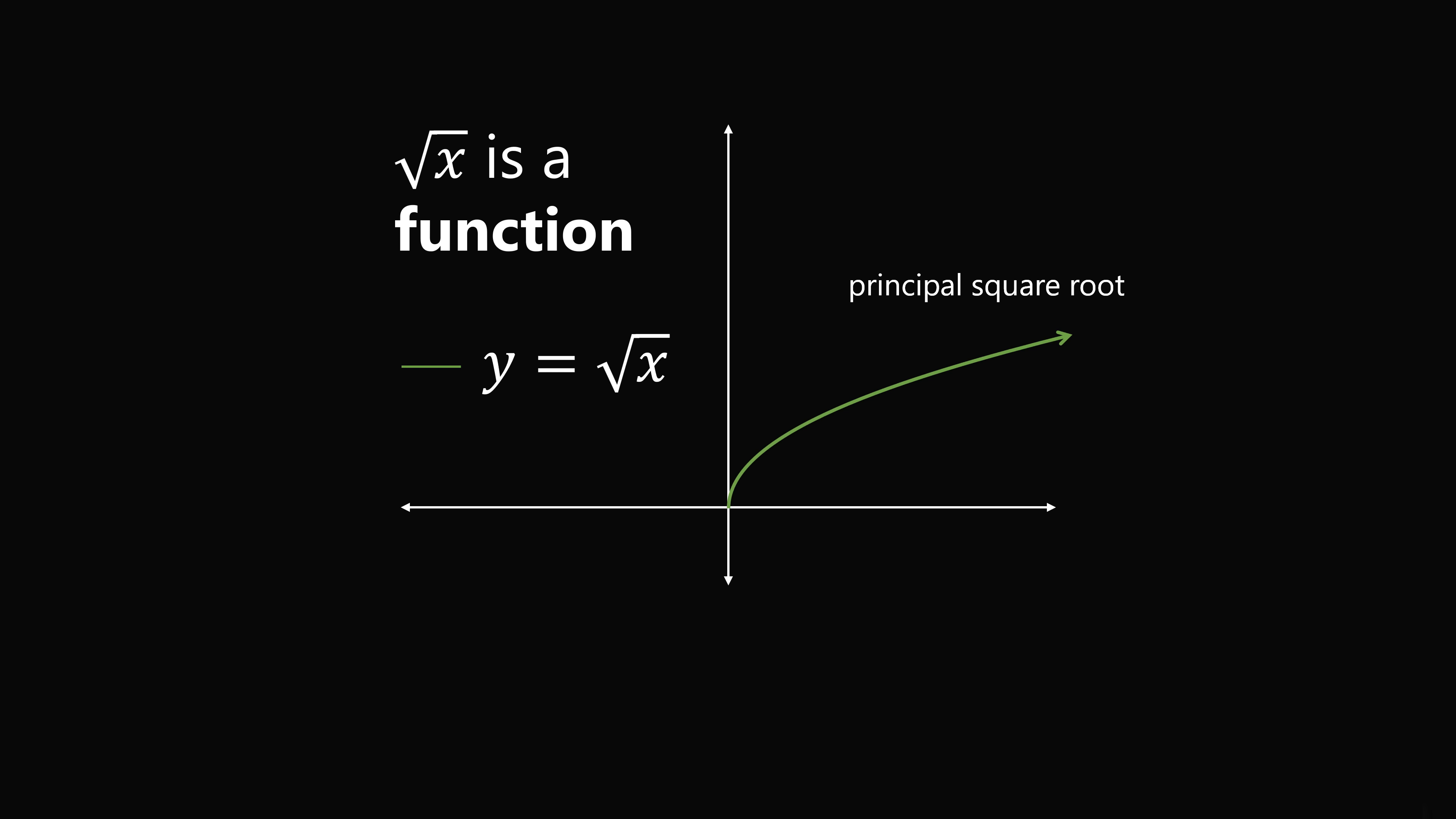So this always comes up in online discussions. If you have something like the square root of 9, is it equal to negative 3 and plus 3 or just plus 3? Typically, we want to just take the non-negative value. So square root of 9 is equal to 3, which is one value.